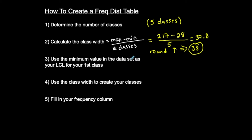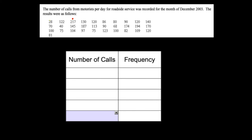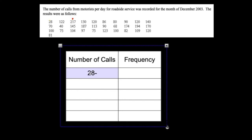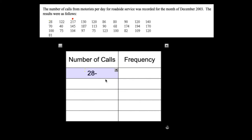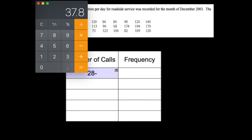Use the minimum value in the data set as your lower class limit for your first class. The lowest value in my data set is 28, so my lower class limit for my first class is going to be 28. To find the upper class limit, remember that the class width was 38. To find class width, you take the upper class limit minus the lower class limit and add 1. So I'm going to do 28 plus 37 to find the upper class limit: 65.